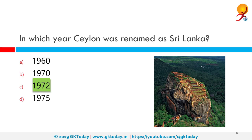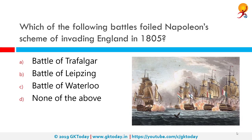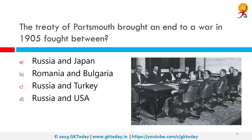Which of the following battles foiled Napoleon's scheme of invading England in 1805? The correct answer is the Battle of Trafalgar. The Battle of Trafalgar was a naval engagement fought by the British Royal Navy against the combined fleets of the French and Spanish navies during the War of the Third Coalition of the Napoleonic Wars.